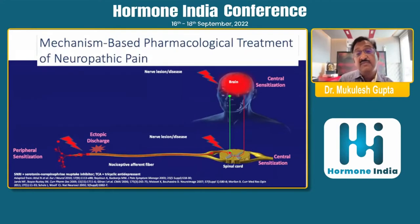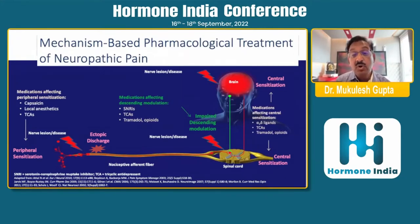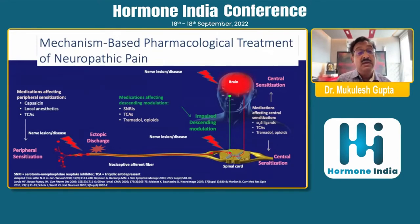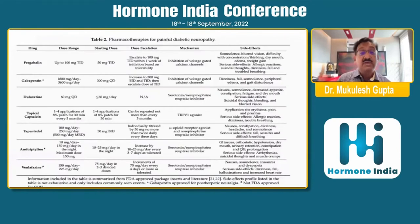We can address various spots in the pain management pathway. If we talk of the central pathway, medications that affect central sensitization include alpha-2-delta ligands, tricyclic antidepressants, tramadol, or opioids. We can affect descending modulation through SNRIs, TCAs, tramadol, or opioids. We can also address nerve terminals through topical application of capsaicin, local anesthetics, or tricyclic antidepressants, and we can even stimulate the spinal cord.